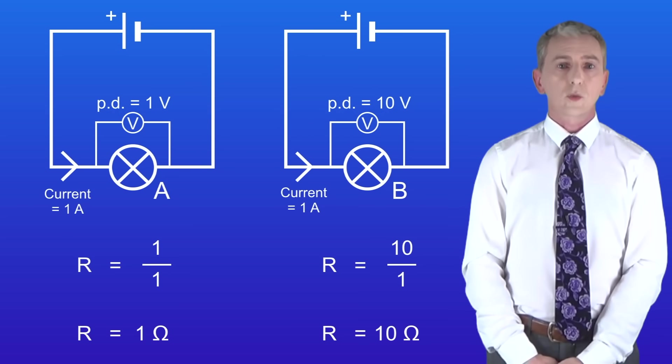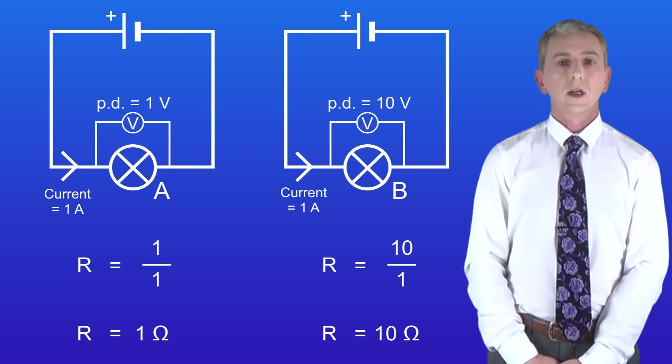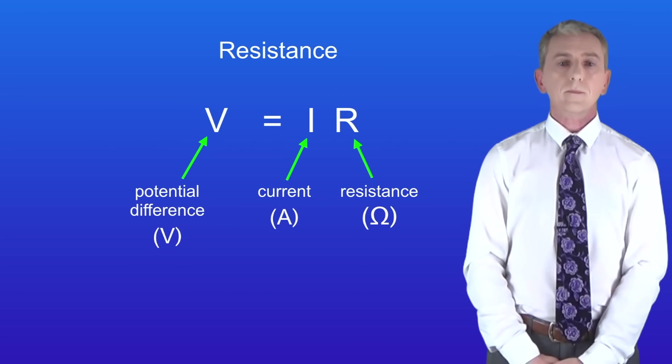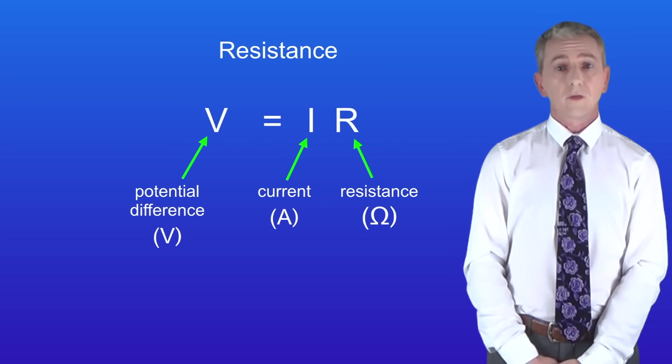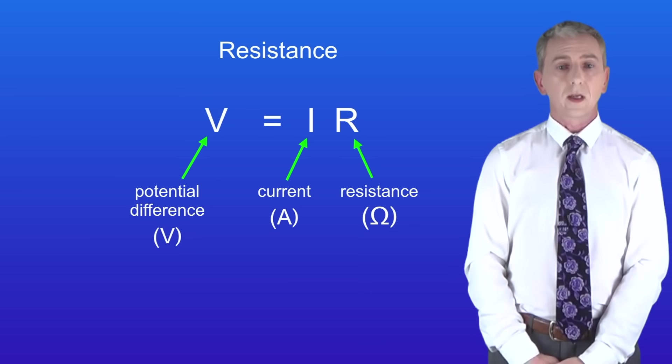Now in the exam you could be asked to work out the potential difference needed to produce a certain current. To do that we need to rearrange the equation for resistance like this. The potential difference in volts equals the current in amperes multiplied by the resistance in ohms.